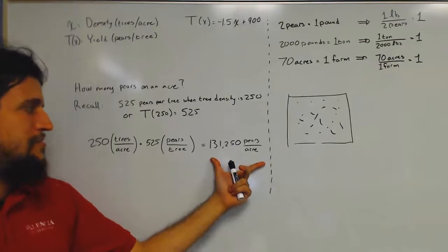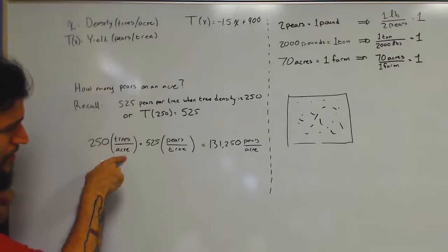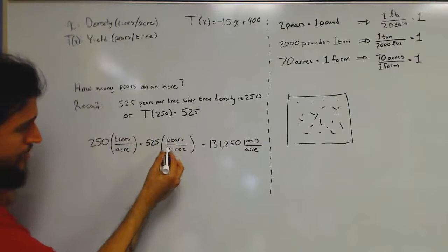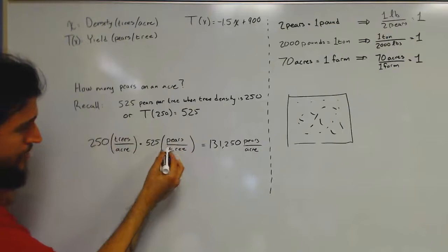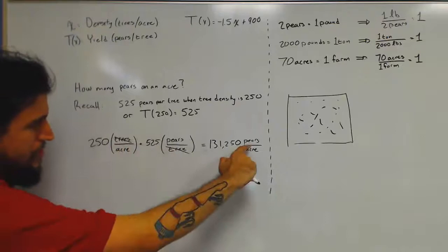And what we actually see happen here is our units will cancel. So we see that we have trees over acres here, and pairs over trees here. But we can treat these units just like factors and just cancel those out. So we see that the only units in the numerator are pairs and the only units in the denominator is acres. And that's exactly what we want.